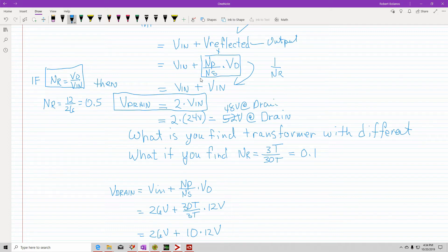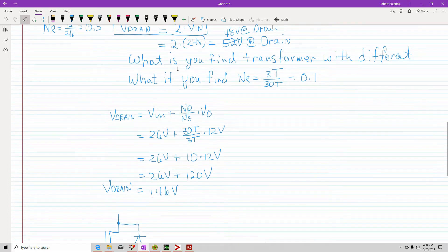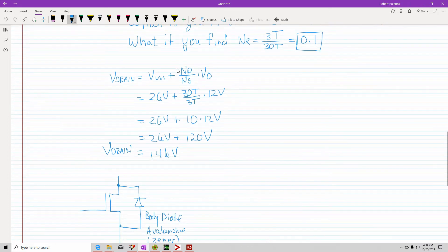So let's say you find a transformer that's different. Let's say the only thing that you have at hand is a 3 turn secondary with 30 in the primary. That would be a 0.1 turns ratio. So let's plug in the numbers and see what happens.